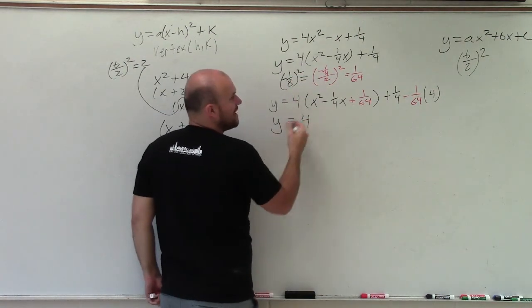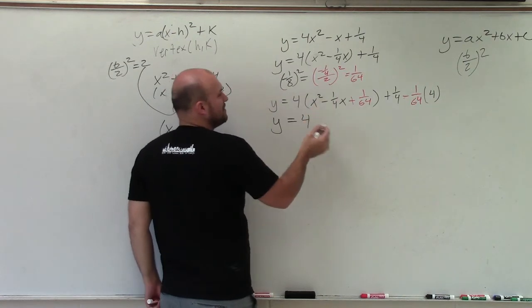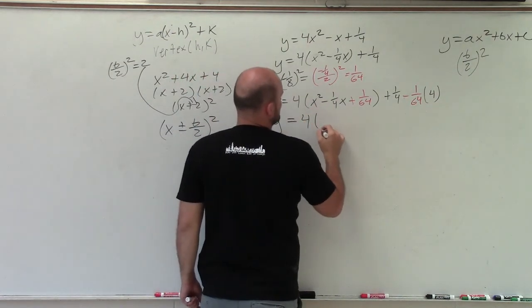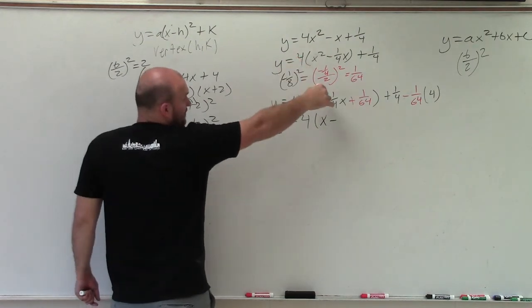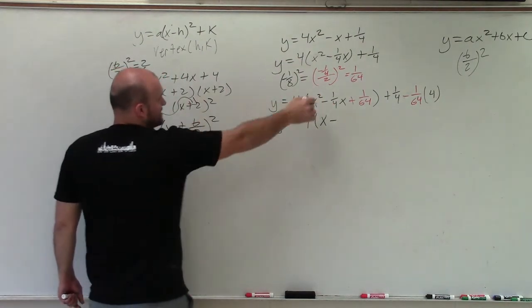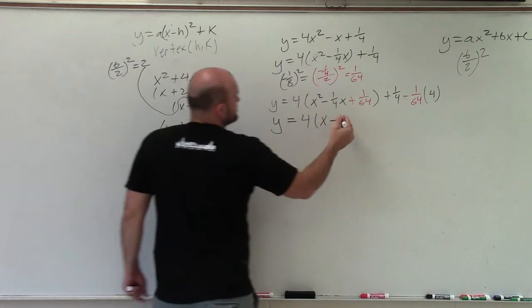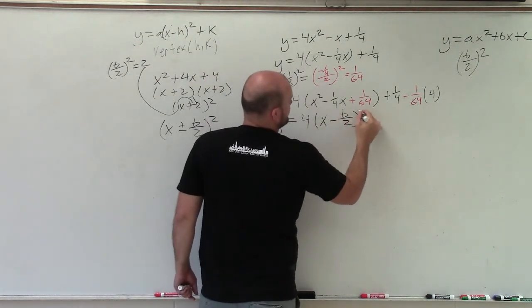That was equal to negative 1 eighth squared. So that is my value for my binomial square. So it's going to be 4 times x minus, it's going to be negative because that was our value. So we take b divided by 2 squared.